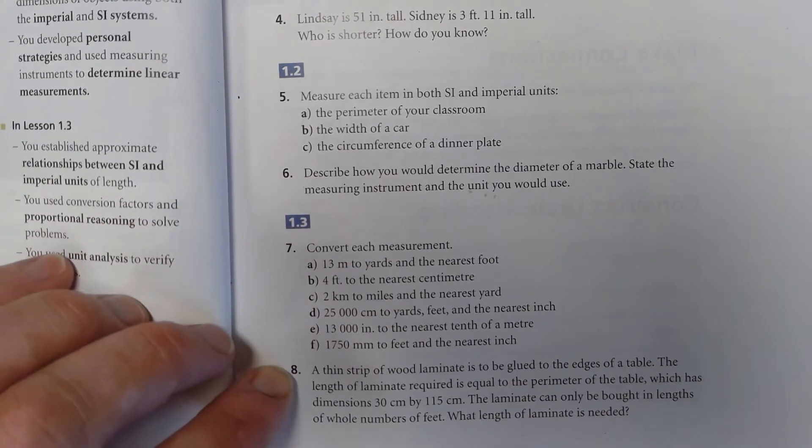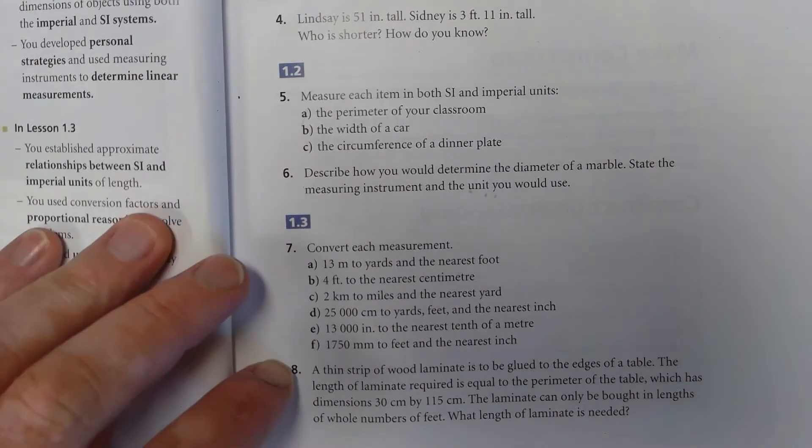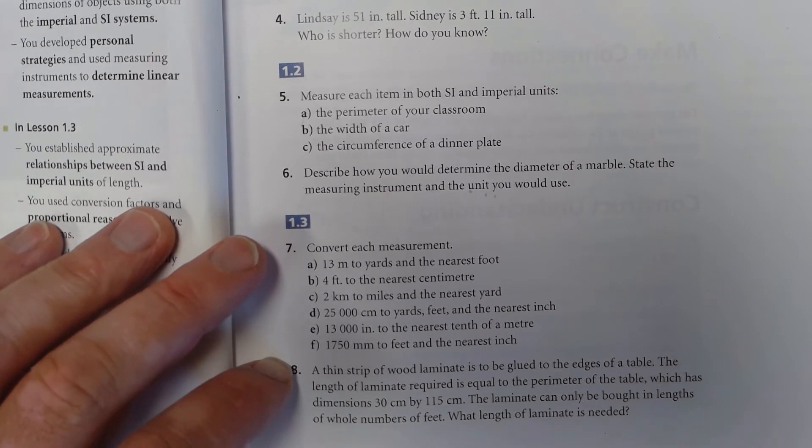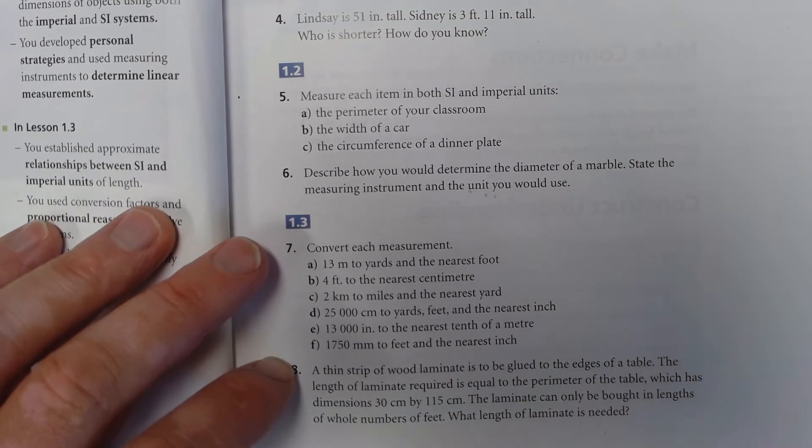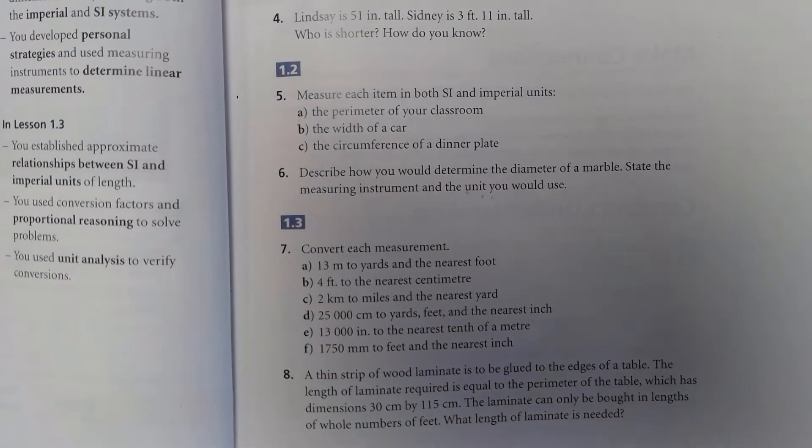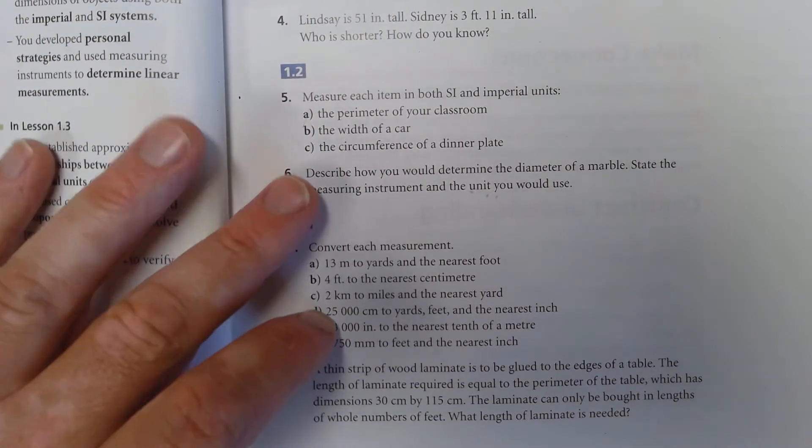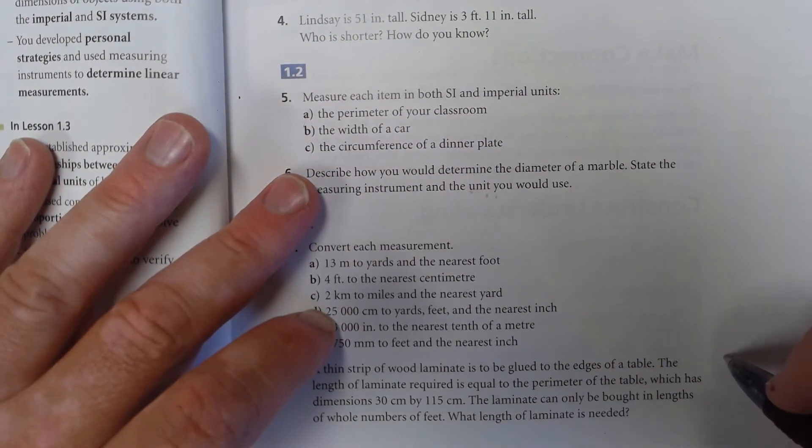And then the last one, a word problem. A thin strip of wood laminate is to be glued to the edges of a table. The length required is equal to the perimeter of the table, which has dimensions 30 centimeters by 115 centimeters. The laminate can only be bought in lengths of whole numbers of feet, so you have to buy a whole foot at a time. What length of laminate is needed?